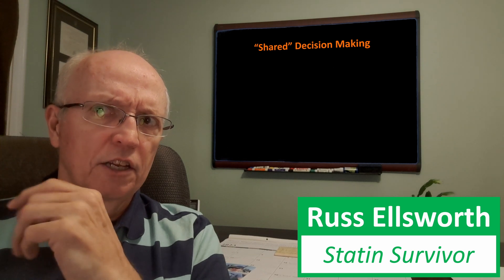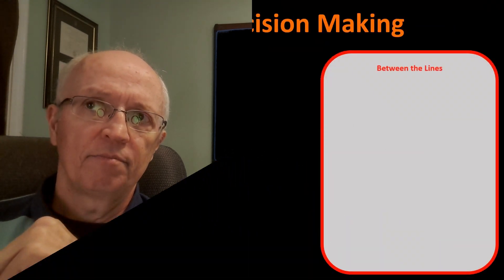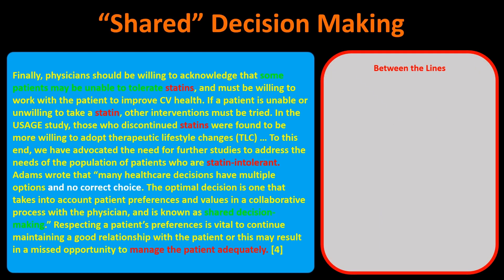Now let's take a closer look at shared decision-making and how it affects that adherence equation, reading between the lines from paper number four. Physicians should be willing to acknowledge that some patients may be unable to tolerate statins and must be willing to work with patients to improve cardiovascular health. If a patient is unable or unwilling to take a statin, other interventions must be tried. The paper advocates for further studies to address the needs of the population of patients who are statin intolerant — this paragraph acknowledges that statin intolerance is a real thing.